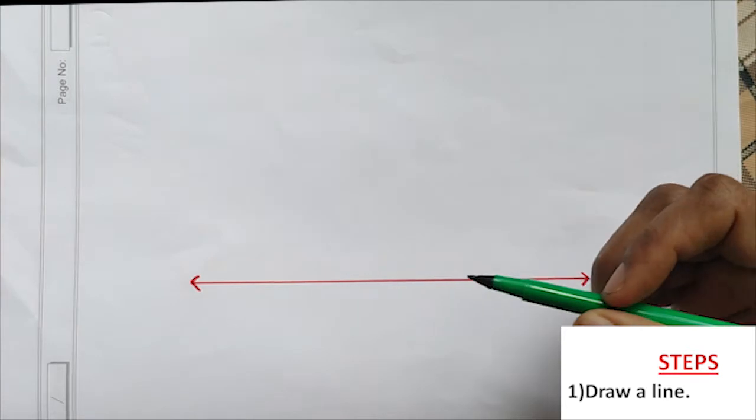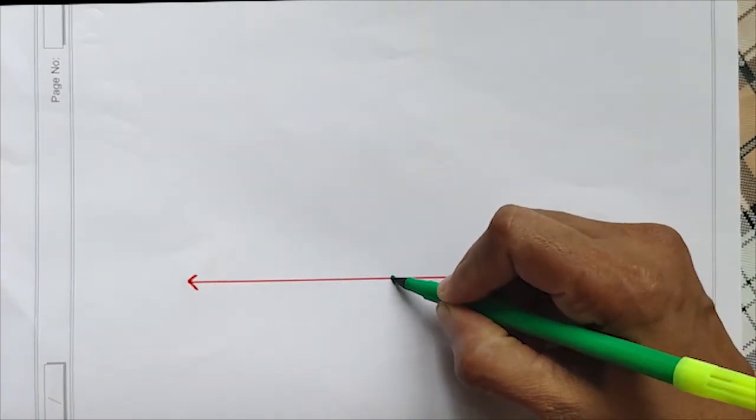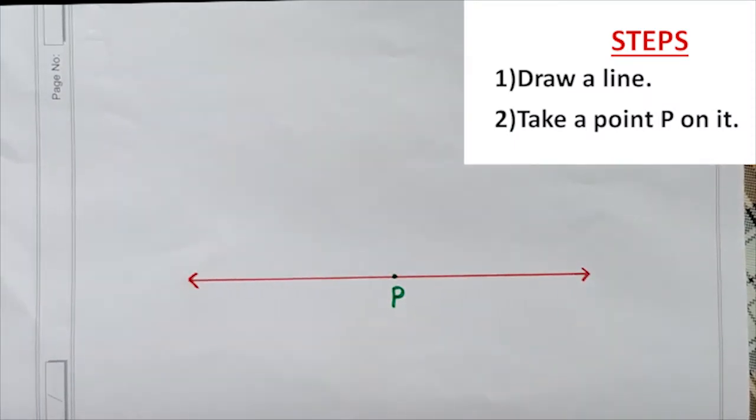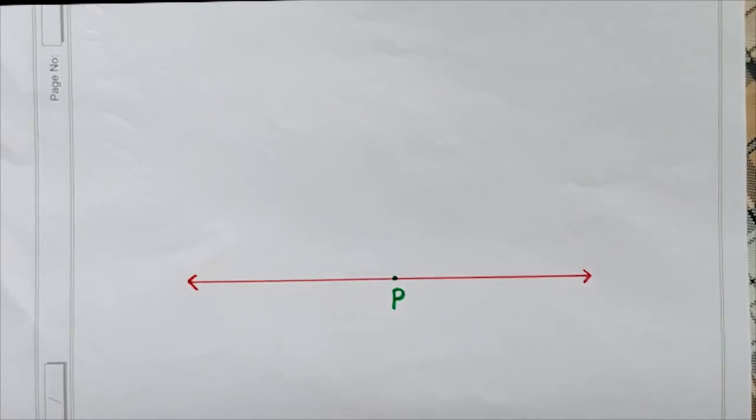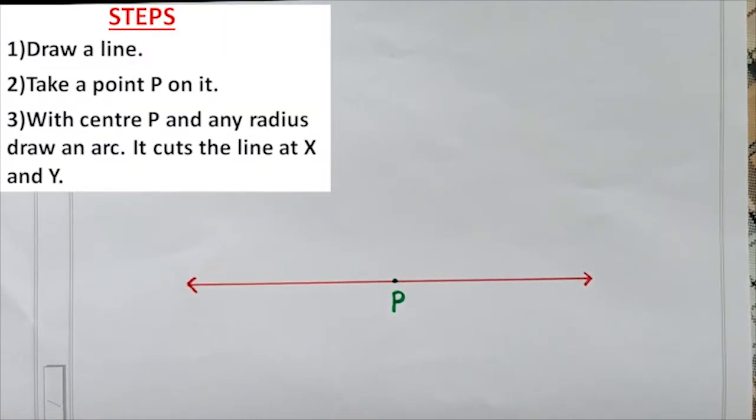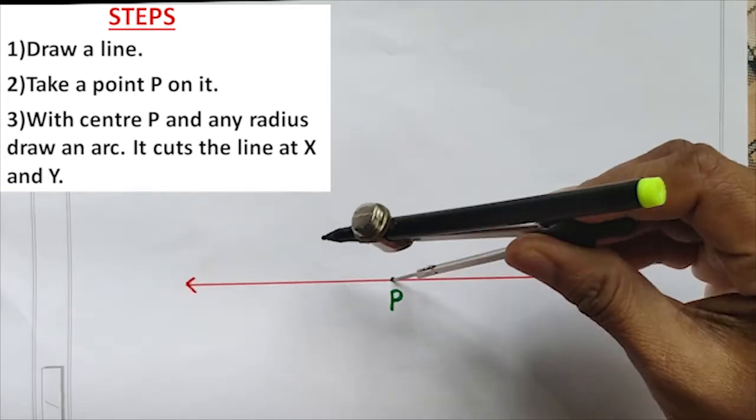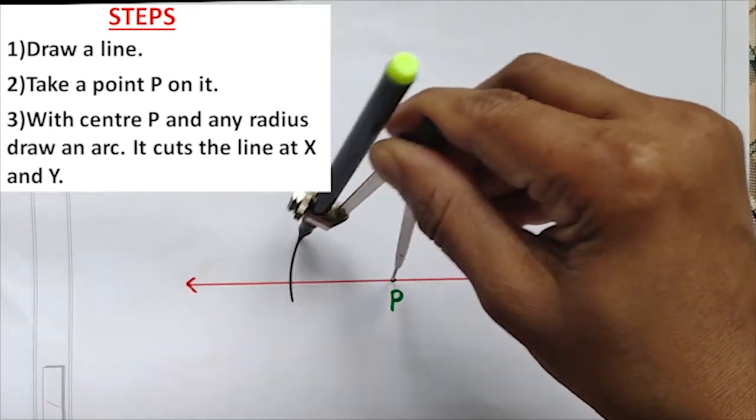For that, first we have to draw a line. Take a point P on it, anywhere you can take but almost in the middle you have to select it. Then with center P, take any radius, that means place the metal tip on P. Then any radius you can select. Draw an arc.